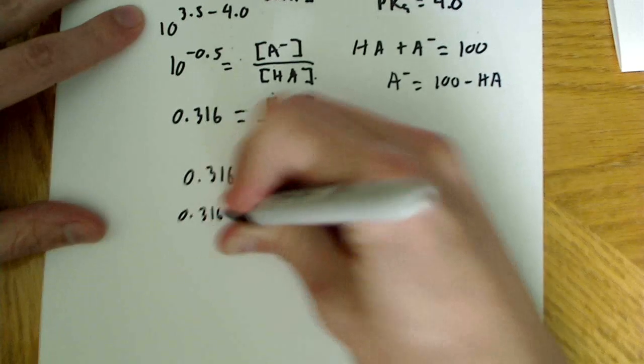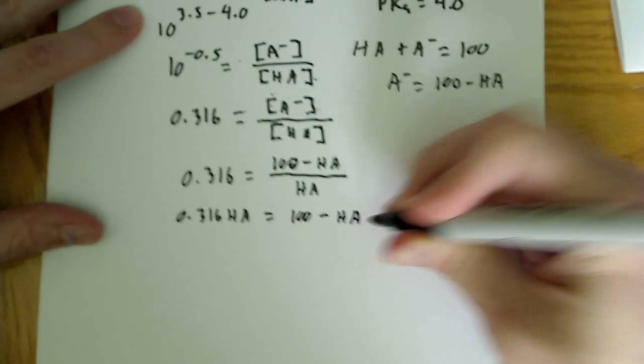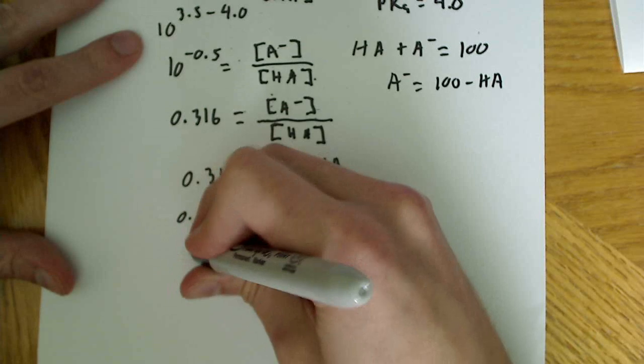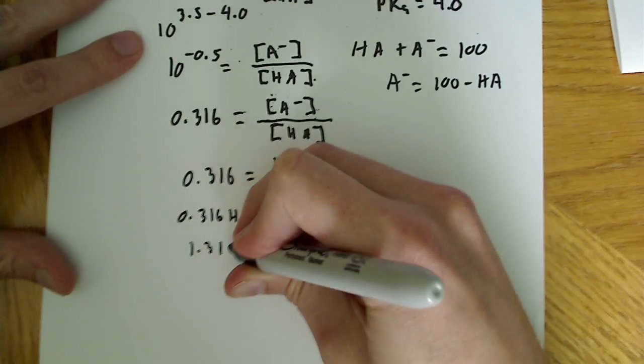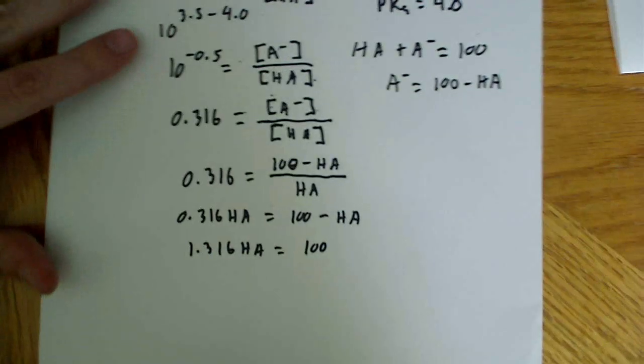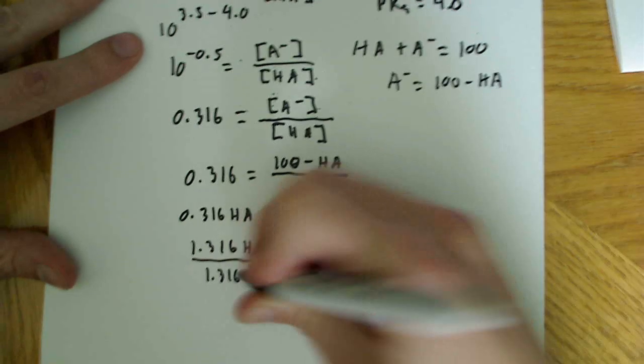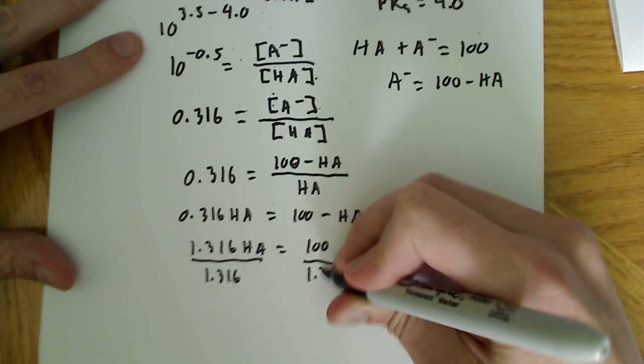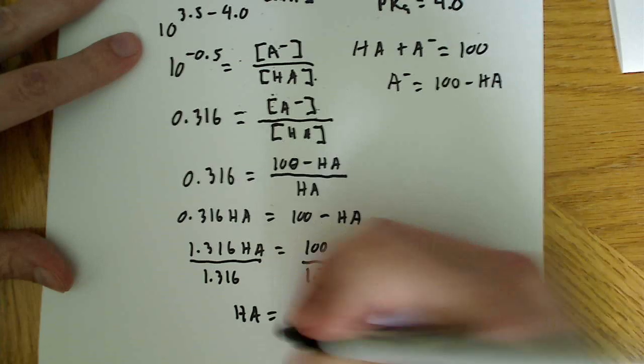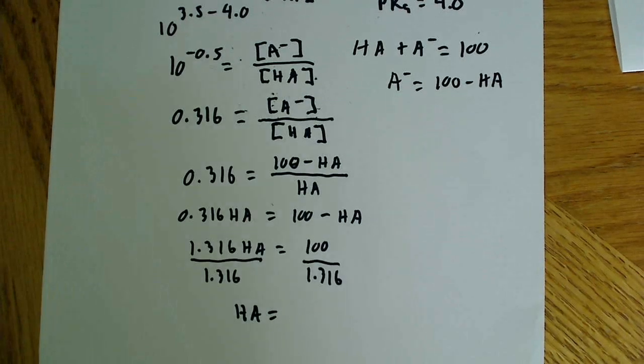Okay, so 0.316 HA is equal to 100 minus HA. Now, I can add HA to both sides. I get 1.316 HA is equal to 100. So, divide both sides by 1.316. And I get HA is equal to 75.98.